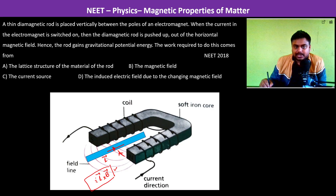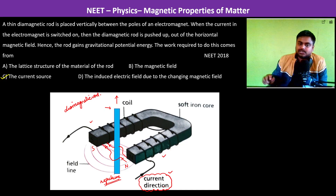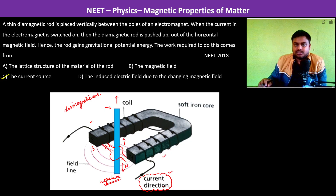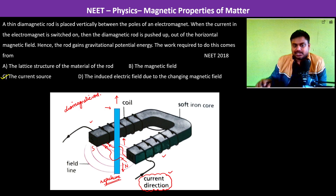Therefore, the better explanation is that there is repulsion occurring due to diamagnetism. Now it is two-way — the rod could have gone up, or the push could have pushed it downwards. If it would have pushed downwards, then with increasing velocity it would have gone down. In both cases, the work is done by the current source.